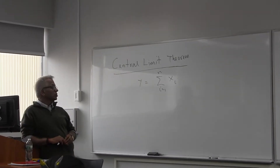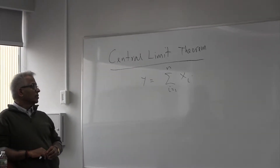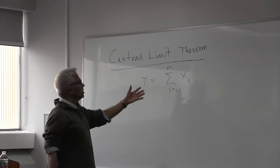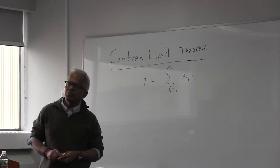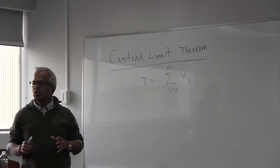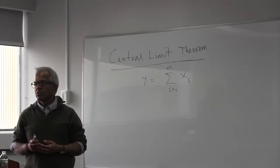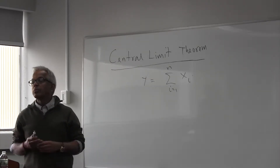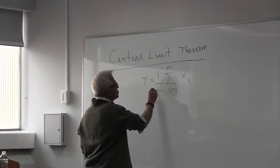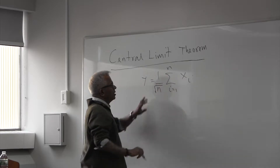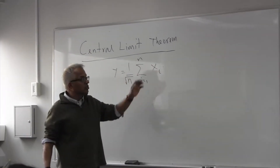The theorem deals with the distribution of a sum of random variables. There are many versions. I am going to do a simple approach of this. So if you add up a large number of random variables, what happens to the distribution? I am going to normalize it also — it is just a constant. So what is the nature of the distribution?